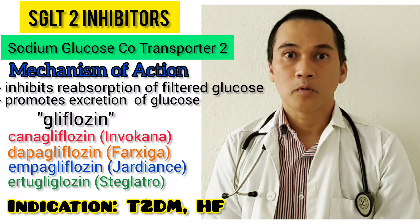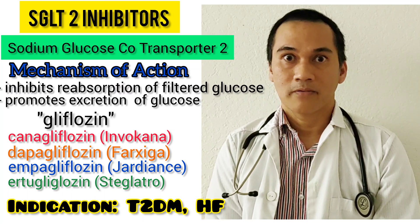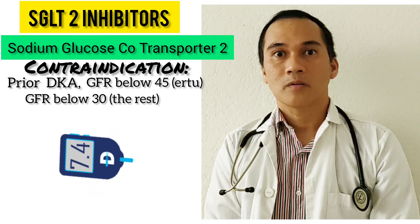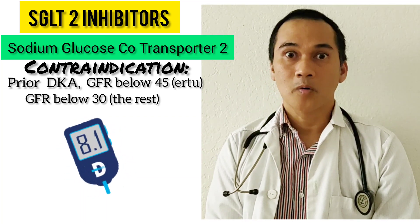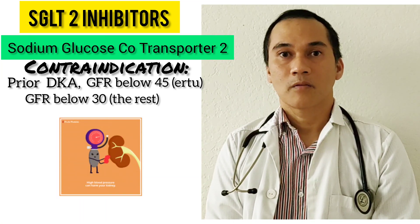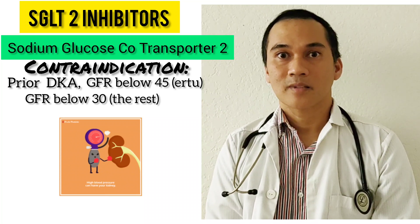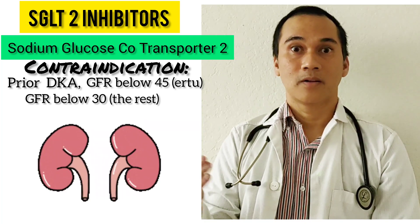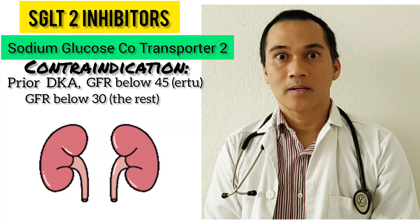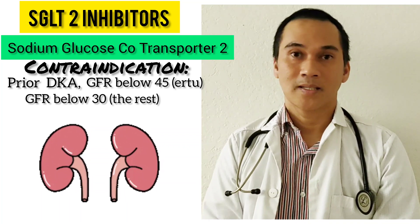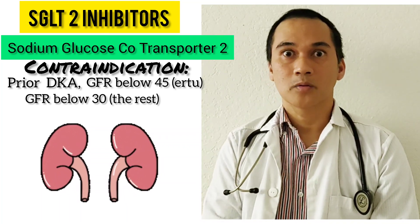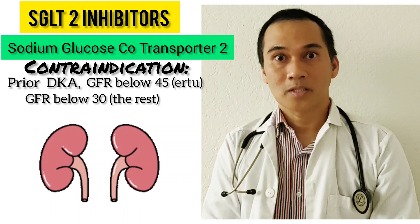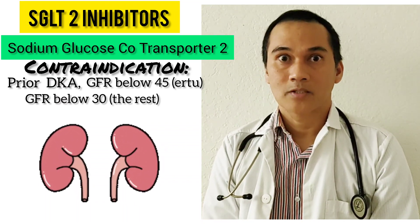This medication improves left ventricular function. The contraindications include DKA. Also, if you are type 2 and your GFR is low — less than 45 for ertugliflozin, and less than 30 for the rest of the medications in this class — because with a low glomerular filtration rate, the drug will not function well to excrete blood glucose from the circulation.